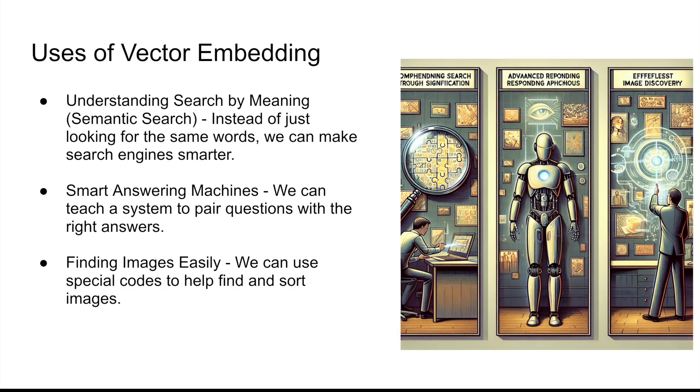Now that we have a fair sense of idea of what vector embeddings are, I'll now touch upon the applications of vector embeddings. Say for example if you have a database of words and you want to search by meaning, then vector embeddings come in very handy. So understanding search by meaning or applying semantic search is where the first use case of vector embeddings come in. Instead of just looking for the same words, we can make search engines much more faster. They can understand what you mean and find better results by special codes that capture the ideas of your search.